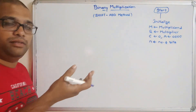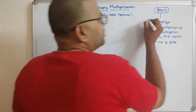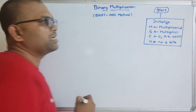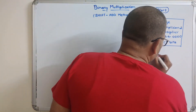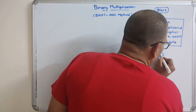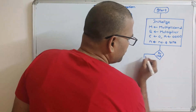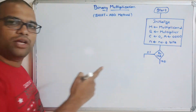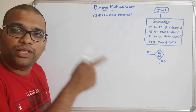N is the number of bits — either 4, 8, 6, or whatever applies. Initialize all these terms. The next step is to find out the Q0 value. Q0 means the LSB bit of the multiplier. There are two possibilities: it is equal to 1 or equal to 0. This is a branch — a decision — where we check the condition by examining the LSB bit of the multiplier.